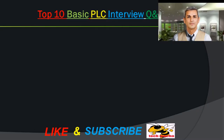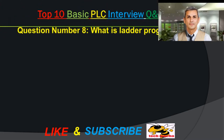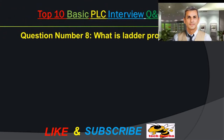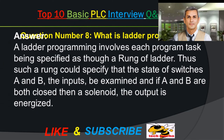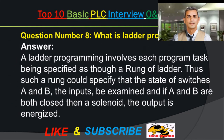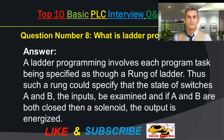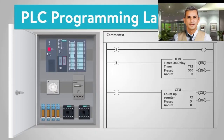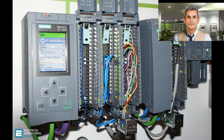Question number 8: What is ladder programming? A ladder programming involves each program task being specified as though a rung of a ladder. Such a rung could specify the state of switches A and B as the inputs, and if A and B are both closed then a solenoid, the output, is energized.